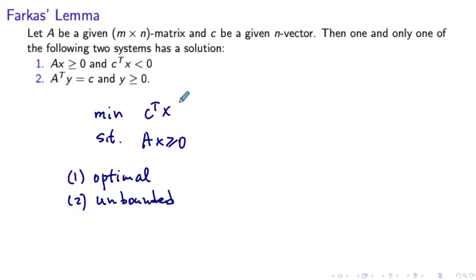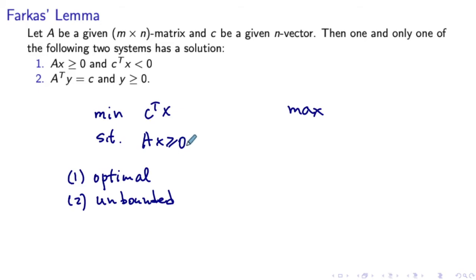If we write down the dual of this LP, we introduce dual variables, denoted by y, a vector of length m. Because we have a greater-than-or-equal-to constraint, y is supposed to be non-negative. The dual LP will be a maximization LP with the objective given by the right-hand side multiplied by y, which is 0 transposed times y, giving us 0. So our objective is constant — we maximize 0. If the dual LP is feasible, our objective equals 0. If it isn't feasible, it's infeasible.